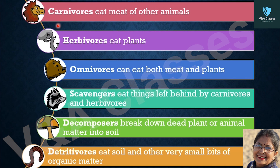Carnivores eat the meat of other animals. Herbivores eat plants. Omnivores can eat both meat and plants.